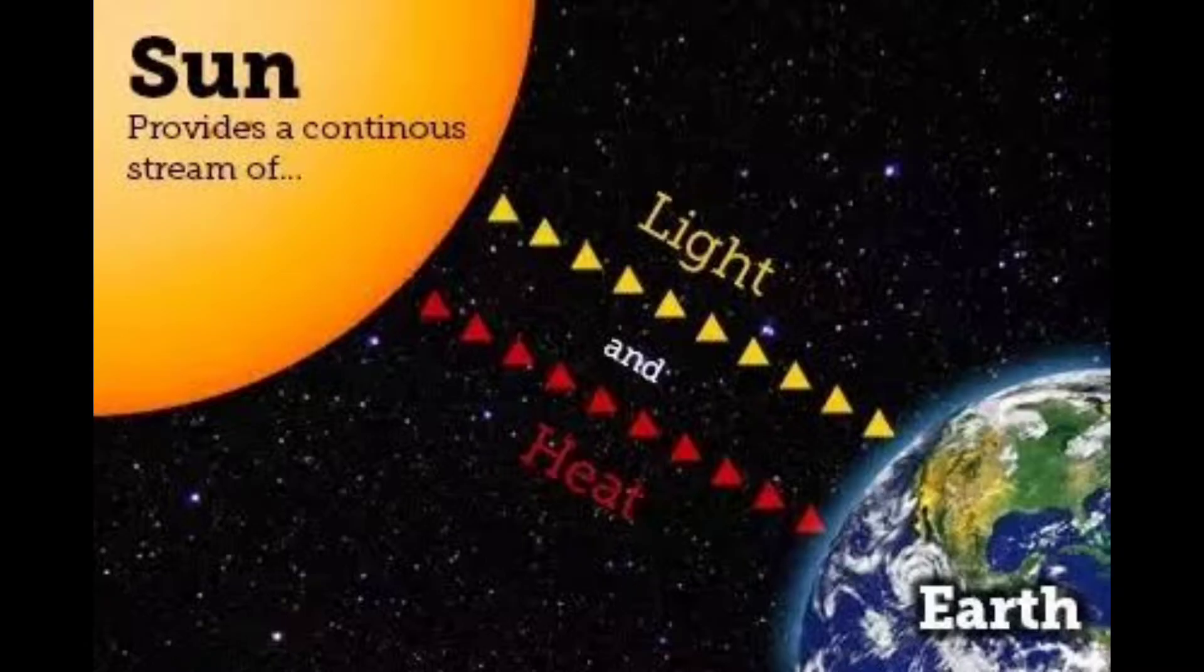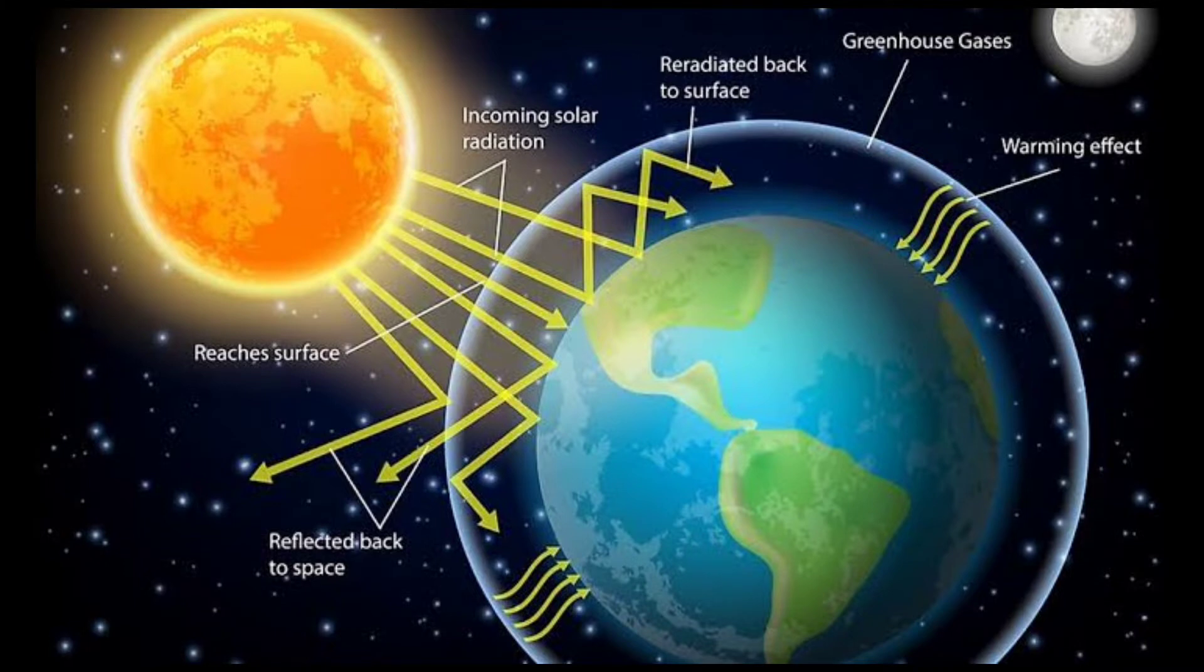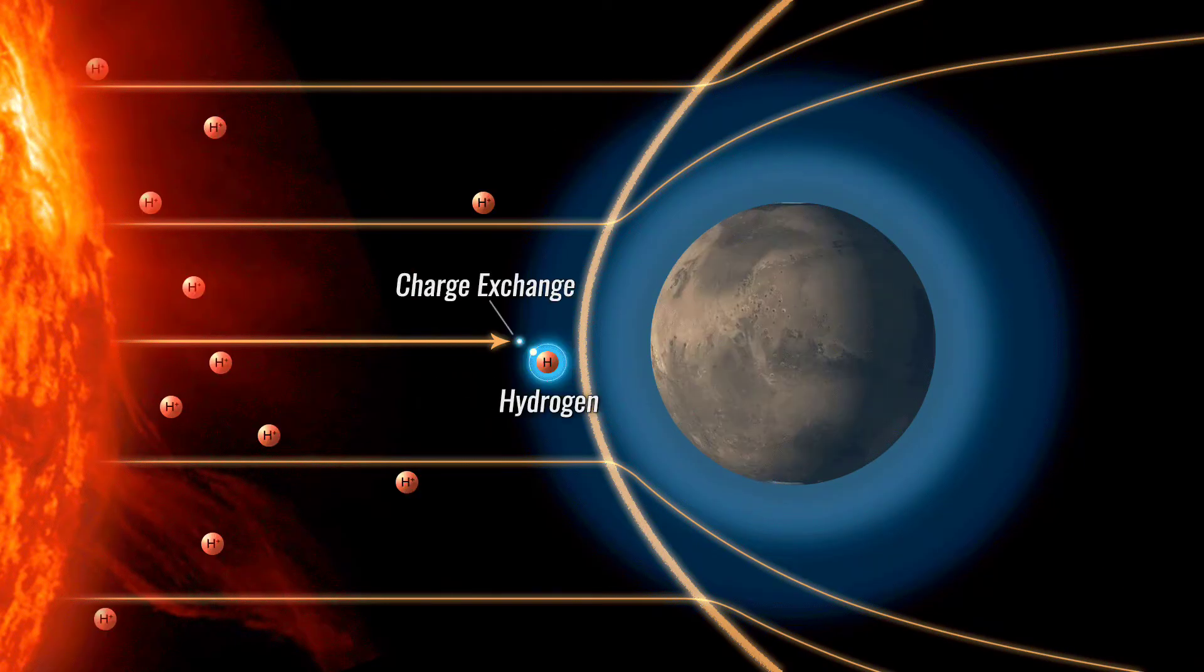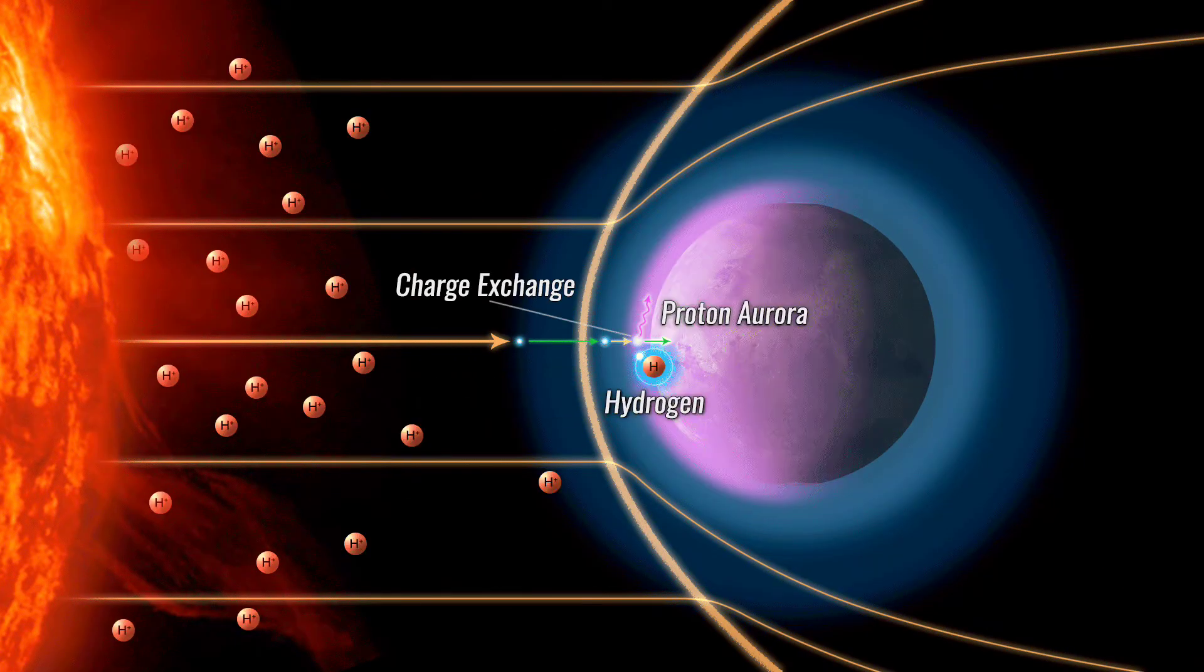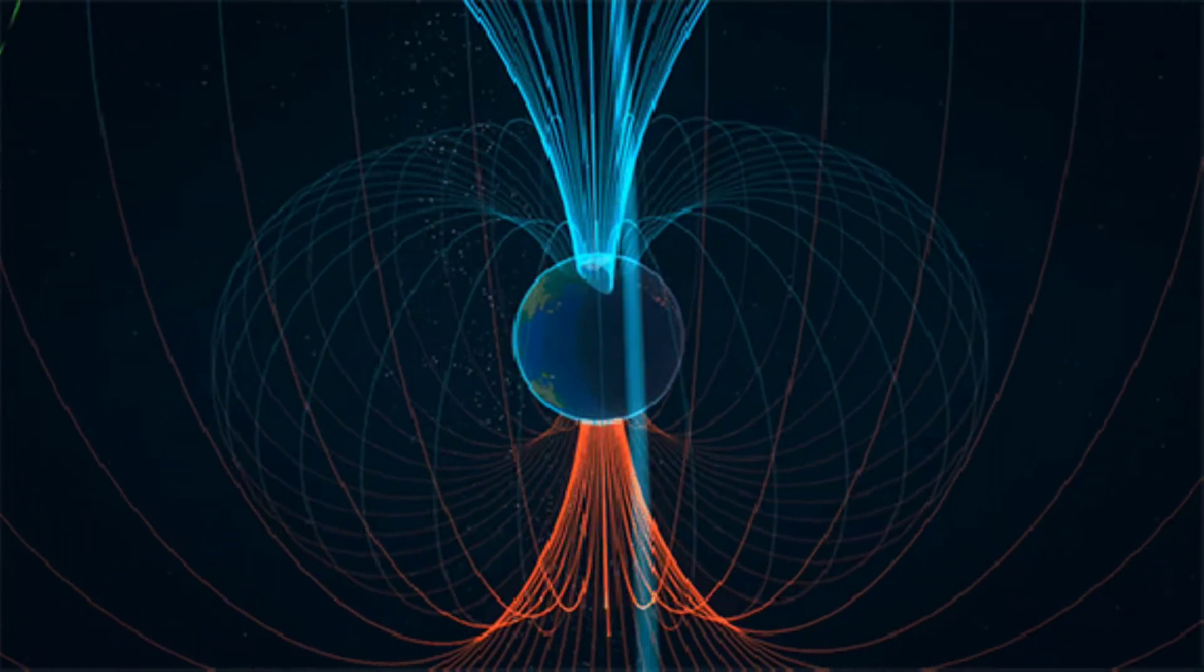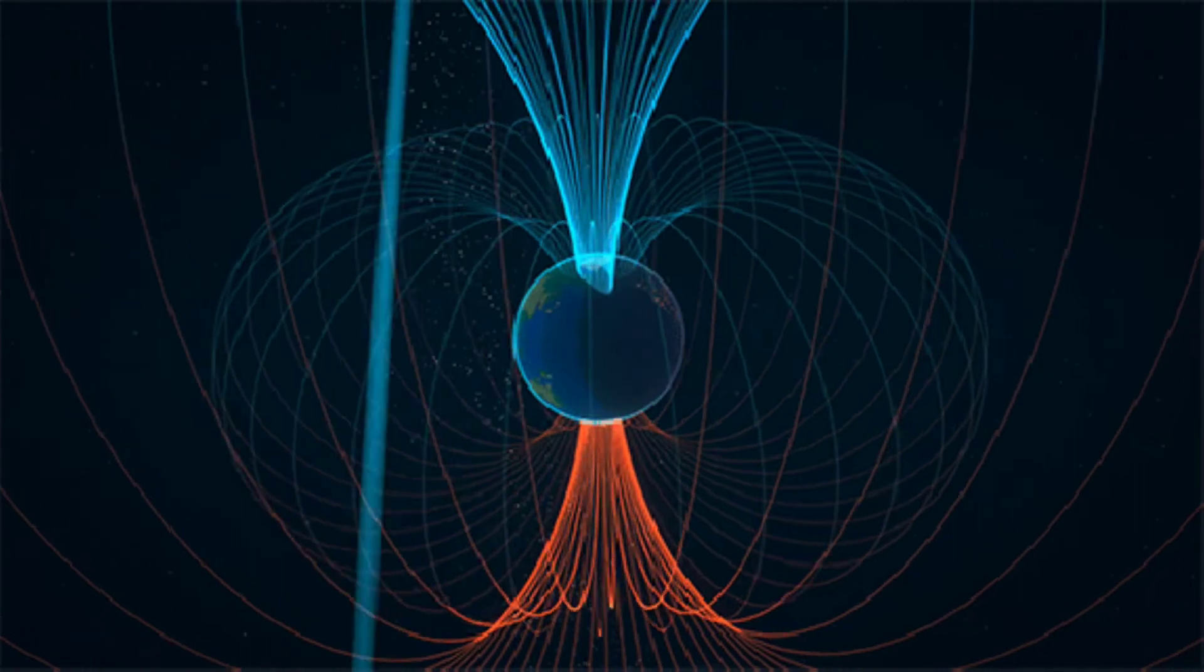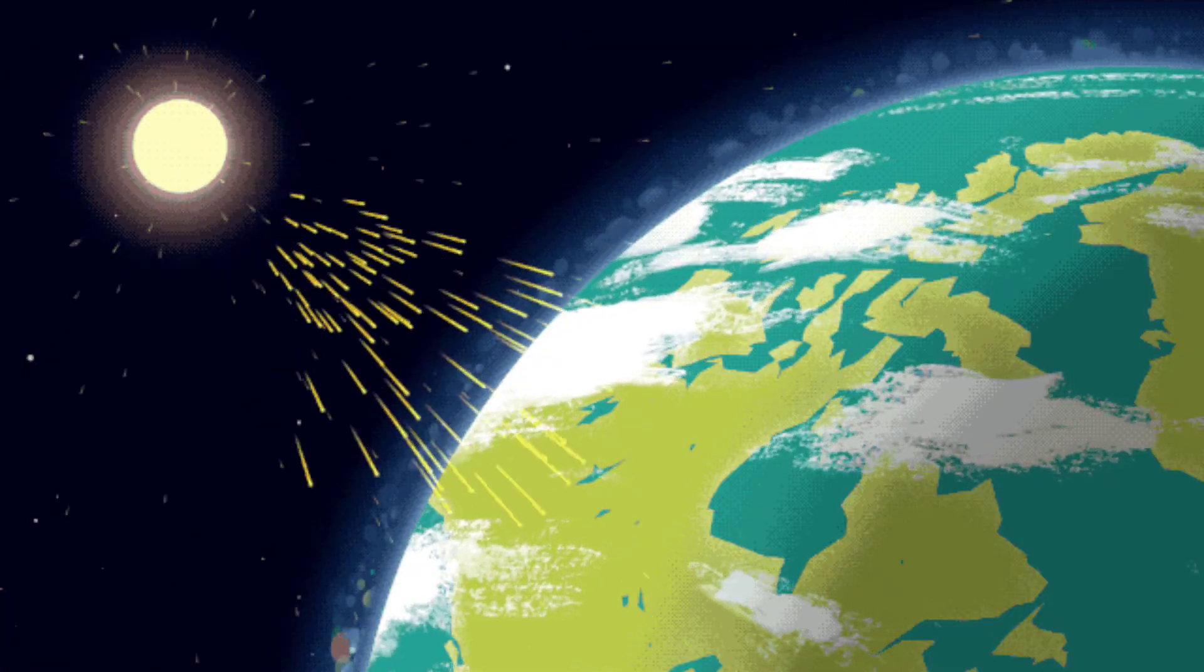Heat and light might be important for life on Earth, but the sun sends other stuff too. The sun sends lots of other energy and small particles toward Earth. Earth's protective magnetic field and atmosphere shields us from most of the energy and particles.